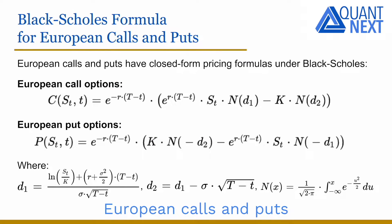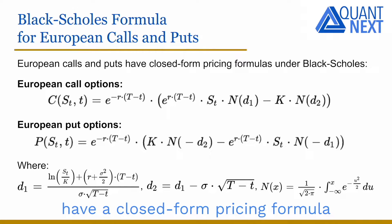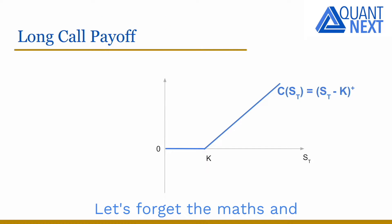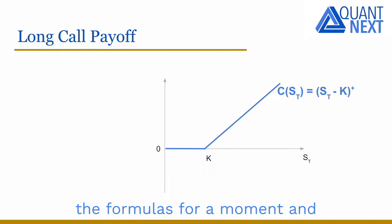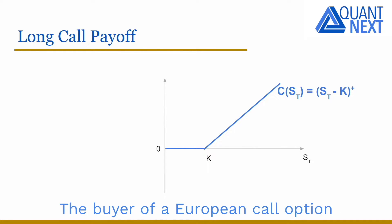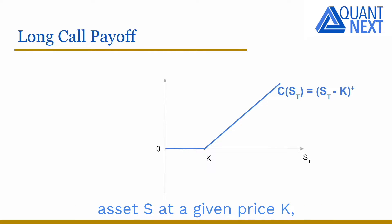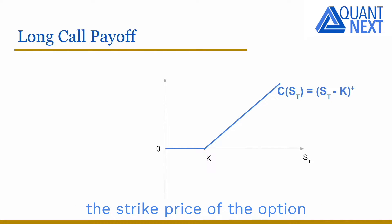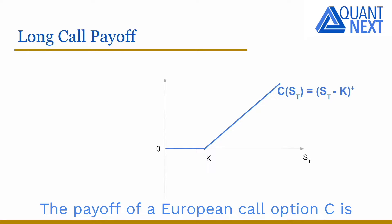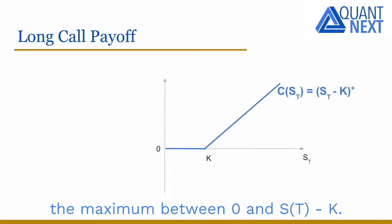European calls and puts have a closed form pricing formula in the Black-Scholes model. Let's forget the maths and the formulas for a moment and go back to the payoff of a call option. The buyer of a European call option has the right to buy the underlying asset S at a given price K, the strike price of the option, at a given date T, the maturity of the option. The payoff of a European call option C is a maximum between 0 and ST minus K.